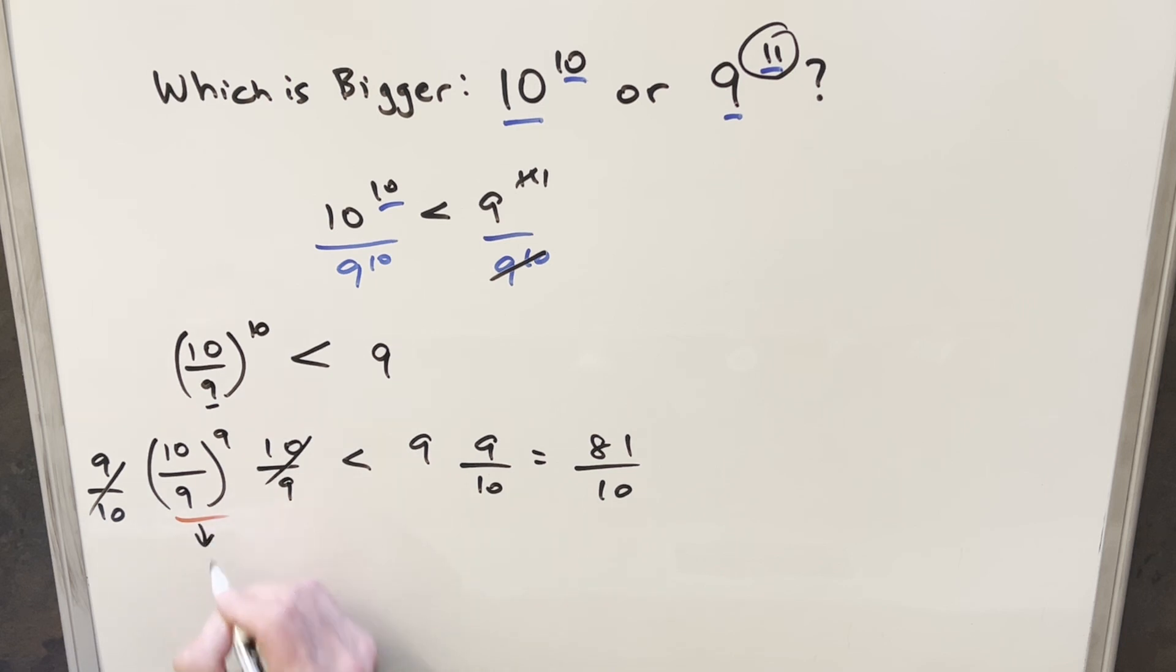Now I can rewrite this differently. I can write this as (1 + 1/9), which is the same as 10/9, all to the 9th power, and we're saying this is less than 81/10. At this point, we can notice that what we have on the left side is like our definition for e, except when the value goes to infinity. Let's take a look at that really quick.